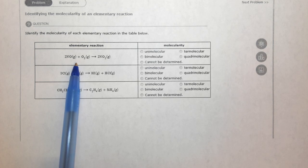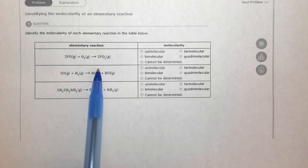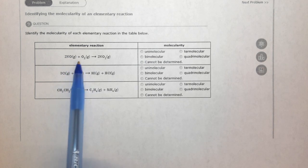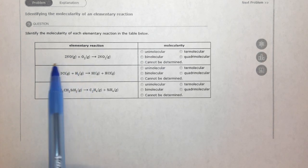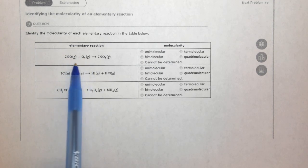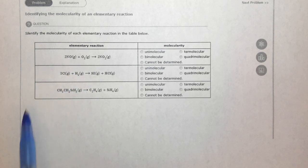So each individual step is only occurring with a collision between two molecules or one molecule falling apart, or whatever the case may be. But it's fairly rare, just because it's statistically not likely, that these three molecules will all collide together at the same time for these types of reactions to occur.